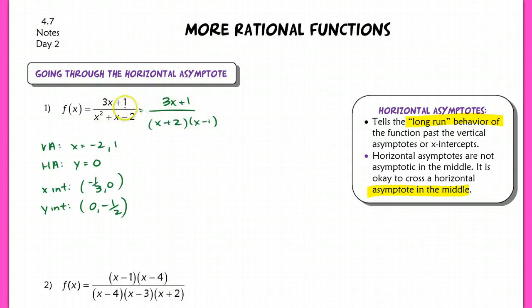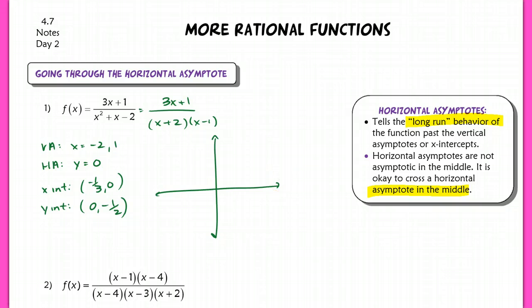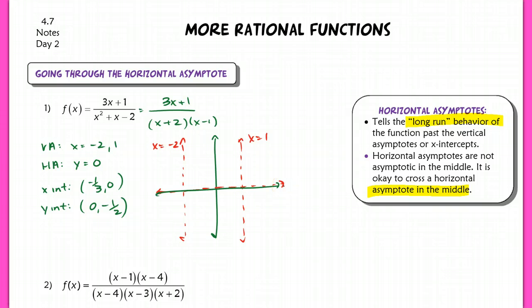After I factor both polynomials and find all the important information — vertical and horizontal asymptotes and the x- and y-intercepts — I'll start graphing. I'll create the vertical asymptote at negative 2 and at 1, and label them, especially on your quiz or test. There's a horizontal asymptote at y equals 0. The x-intercept goes through that horizontal asymptote, so I plot a point at negative 1/3, 0 and at 0, negative 1/2.